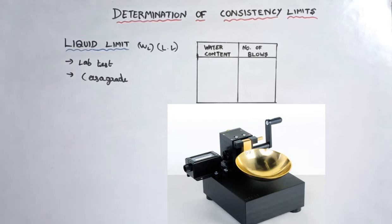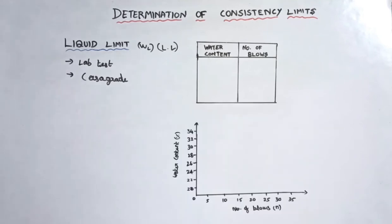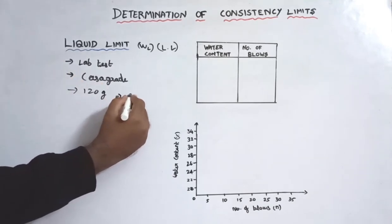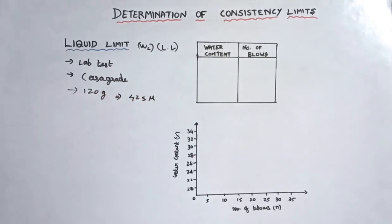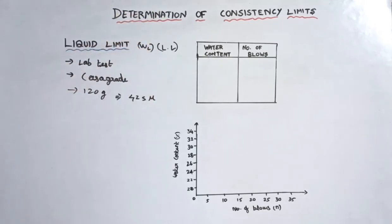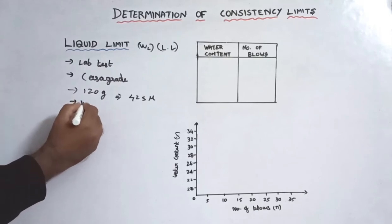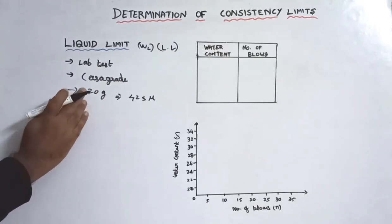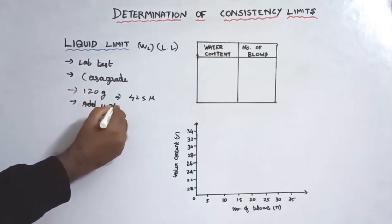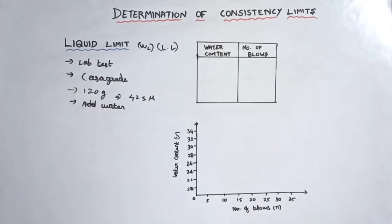If we put a rubber pad on the bottom, it will hit it and rise up and down. There is a rotating handle; if we rotate it, it will rise up and down. What we do is take 120g of soil sample of a particular size, then add a pre-determined amount of water.